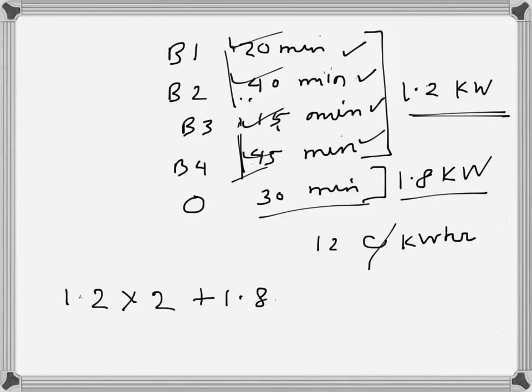For the oven, 1.8 times 30 minutes is half an hour, so 30 over 60 which is 0.5. So 1.2 into 2 is 2.4, plus 0.9, equals 3.3 kilowatt hours. That's the total energy. The energy cost is 12 cents per kilowatt hour.